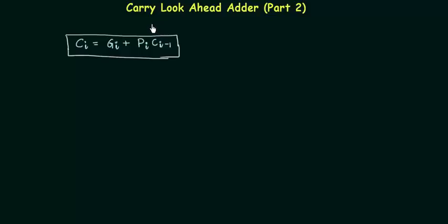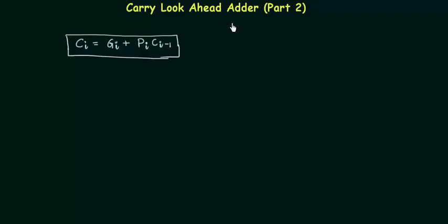Welcome to the second part of carry look-ahead adders. In the last presentation we found that ci is equal to gi or pi times ci minus 1. We already know that we are going to use this equation to predict the carry, and the prediction of carry is everything in carry look-ahead adders.